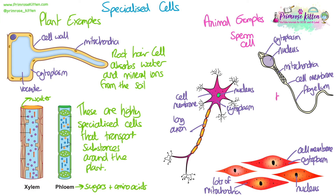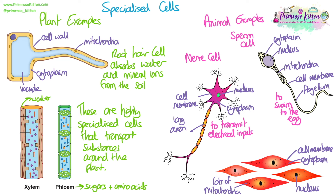Some animal examples we need to know. A sperm cell has all the familiar structures, but also has a flagellum allowing it to swim to the egg, which is one of its main functions. A nerve cell is very similar — we can label familiar structures — but the really long axon is to help transmit electrical impulses across long distances. Finally, muscle cells have lots of mitochondria — far more than a normal basic cell — because they need that energy to contract, which is their function.